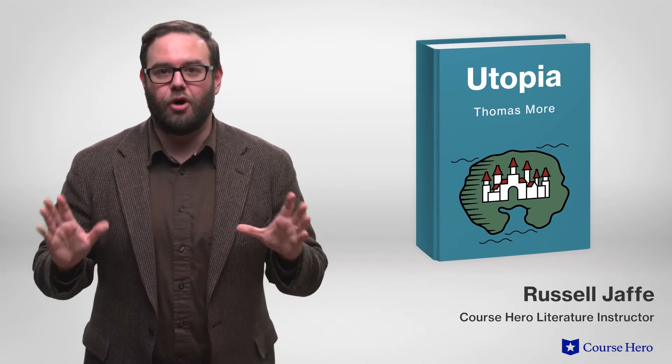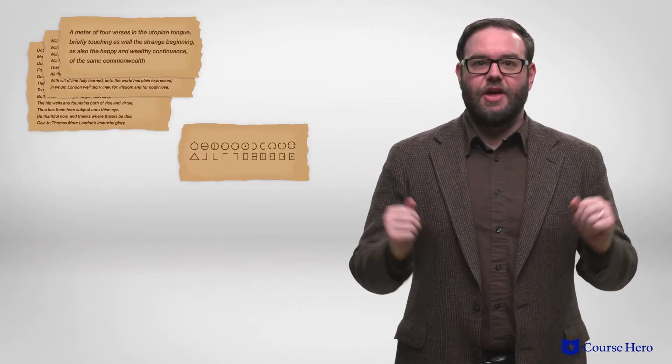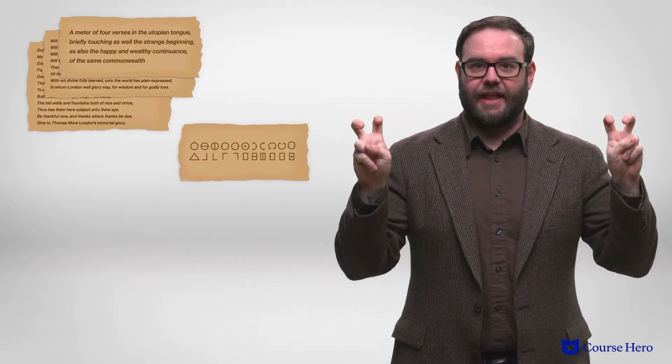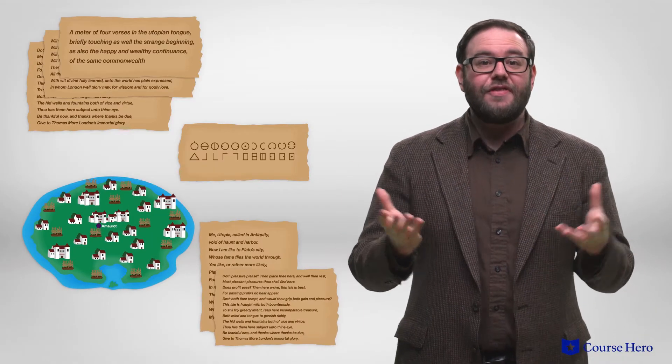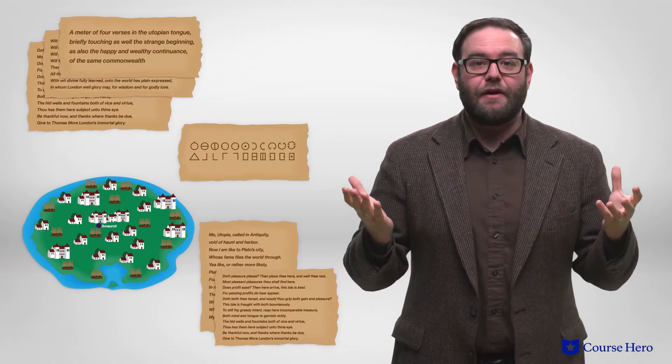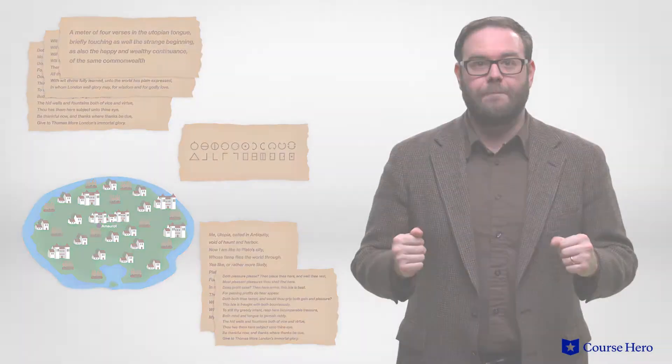Let's summarize the entirety of the book Utopia. At the onset of Utopia, More provides a number of made-up but intriguing items in a section called the front matter, which include poems and an alphabet in the Utopian language, maps of Utopia, and letters that supposedly verify the existence of Utopia.